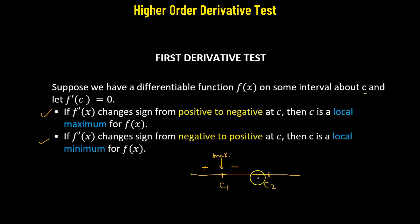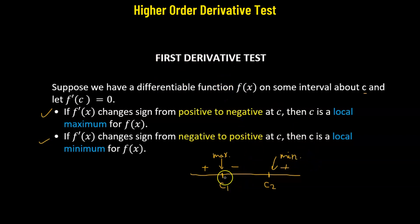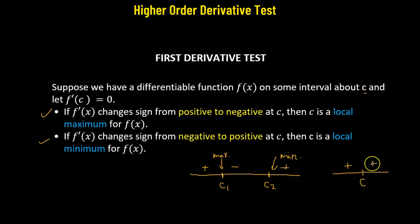Similarly, when we cross point c2, if the sign changes from negative to positive going from left to right, then c2 is a point of local minima. However, there are cases where crossing the critical point the sign does not change — it stays positive or negative — in that case, c is a point of inflection. We'll talk more about inflection later on.